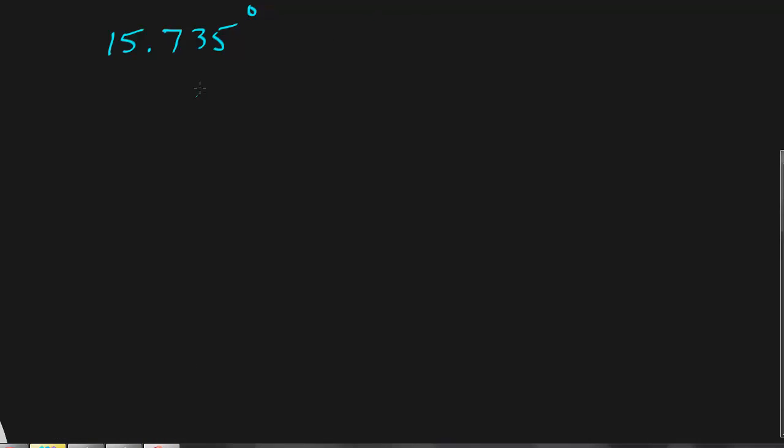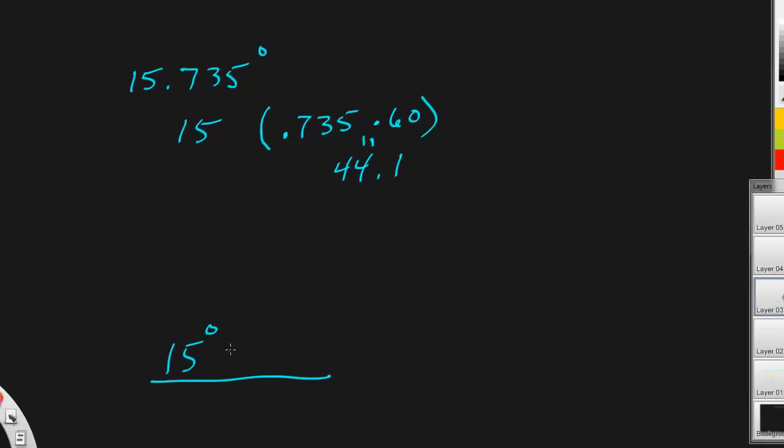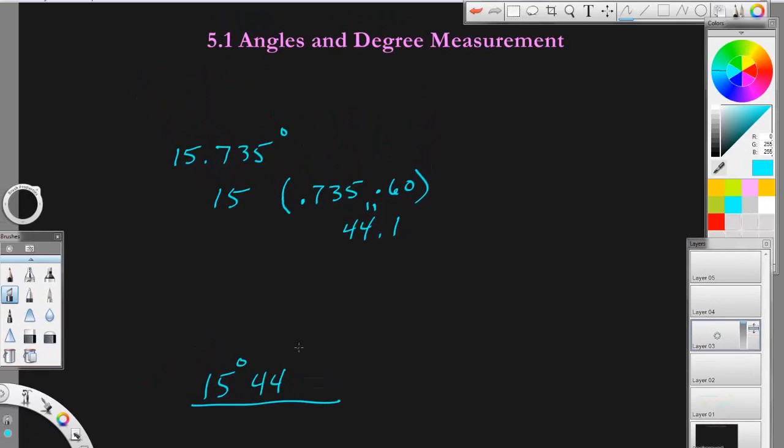We have another problem. We're going to convert this to degrees, minutes, and seconds. So we're going to have 15, and we're going to take 0.735 and multiply that by 60. When you do that, you're going to get 44.1.